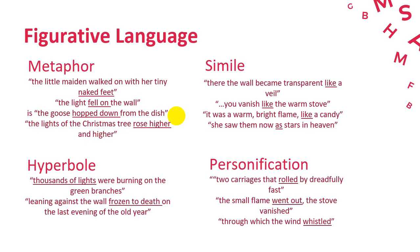Next there is hyperbole. The hyperbole I found is: 'thousands of lights were burning on the green branches.' Here 'thousands of lights' is an exaggeration — it means many lights. The author uses hyperbole to make the word 'thousands of lights' more vivid. Another example: 'leaning against the wall, frozen to death on the last evening of the old year' — 'frozen' here means her body was very cold, indicating that the little girl died in a cold state.